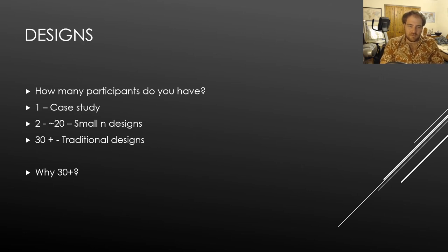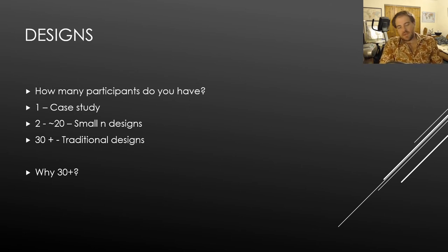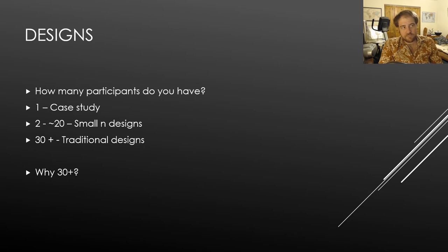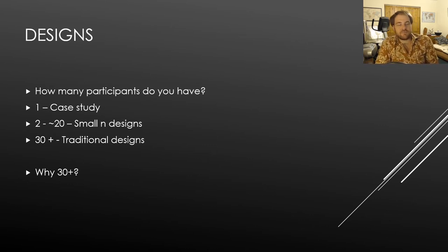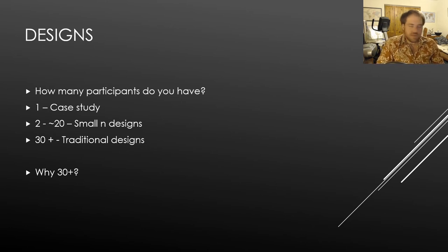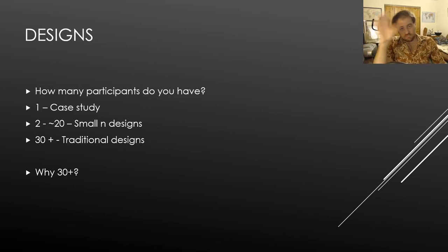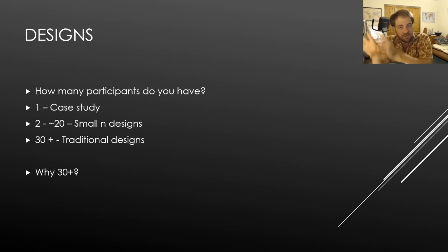With a case study, all you can really do is describe the phenomenon — you can't compare anything. When you have between two and about twenty participants you have to use small-N designs, which are also suboptimal but can be done. When you get to thirty or more you can use traditional experimental designs — thirty or more participants per group.